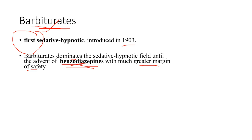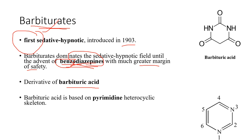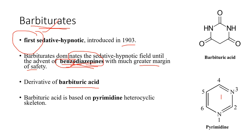Barbiturates are so named because of their chemical structure — similarly, benzodiazepines are named for their combination of a benzo and diazepine ring. Barbiturates are derivatives of barbituric acid. In the structure of barbituric acid there is a heterocyclic ring with nitrogen at the one and three positions, called pyrimidine — a six-membered ring structure with nitrogen at positions one and three.